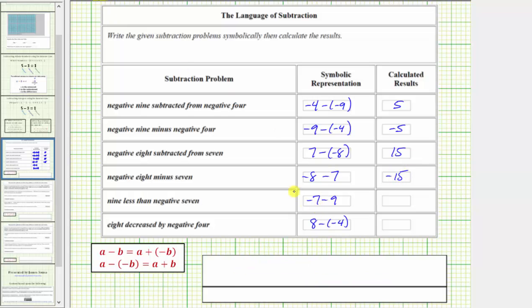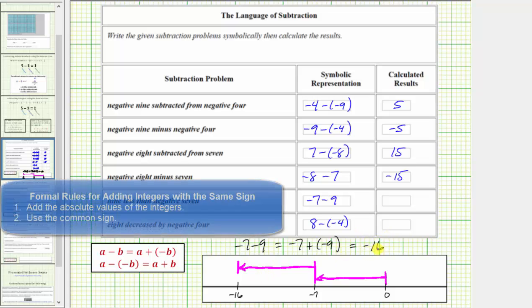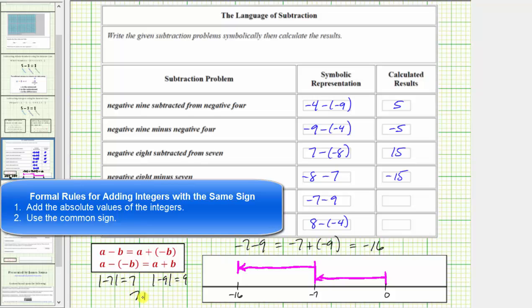The next example is very similar. Negative 7 minus 9 is equivalent to negative 7 plus negative 9. On the number line, we first model negative 7 by moving left 7 units from 0. Because we're adding negative 9, we move left 9 more units from negative 7, which puts us at negative 16. Using the formal rules, the absolute value of negative 7 is 7 and the absolute value of negative 9 is 9. 7 plus 9 equals 16, and because we're adding two negative integers, the sum is negative 16.